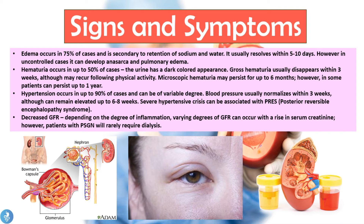Hypertension occurs in up to 90% of cases and can be of variable degrees. Blood pressure usually normalizes within three weeks, although it can remain elevated for up to six to eight weeks. Severe hypertension can be associated with posterior reversible encephalopathy syndrome. These patients will also have a decreased GFR — glomerular filtration rate — with varying degrees of kidney dysfunction and a rise in serum creatinine, although patients rarely require dialysis.